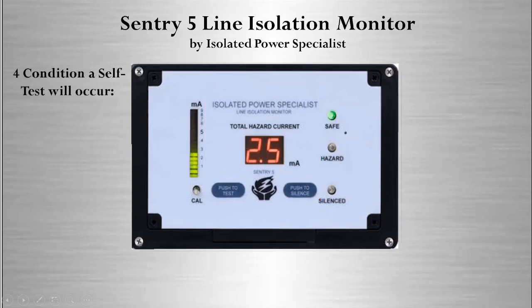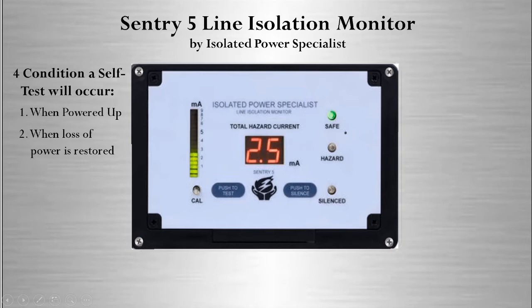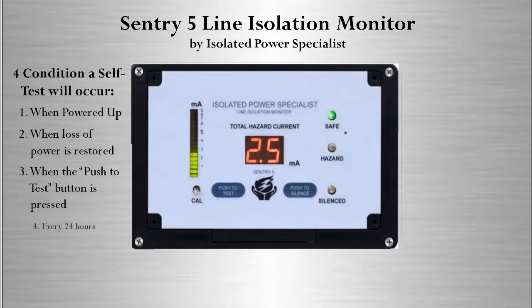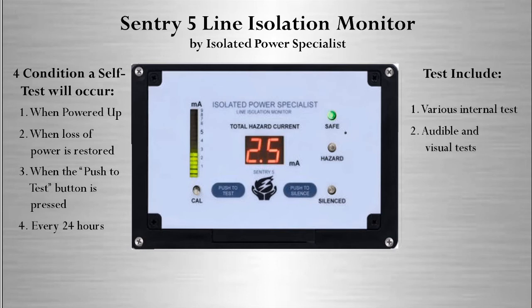There are four conditions under which the Century 5 will perform a self-test. One, when it is powered up. Two, if the Century 5 loses power then regains it again, it will see this as a power-up situation. Three, you can manually initiate a self-test by simply pressing the push-to-test button. And four, every 24 hours, the Century 5 will initiate an internal self-test, but without the audible alarm. The Century 5 will perform several internal tests, including the required audible and visual test. Again, the audible test is excluded during the 24-hour self-test.